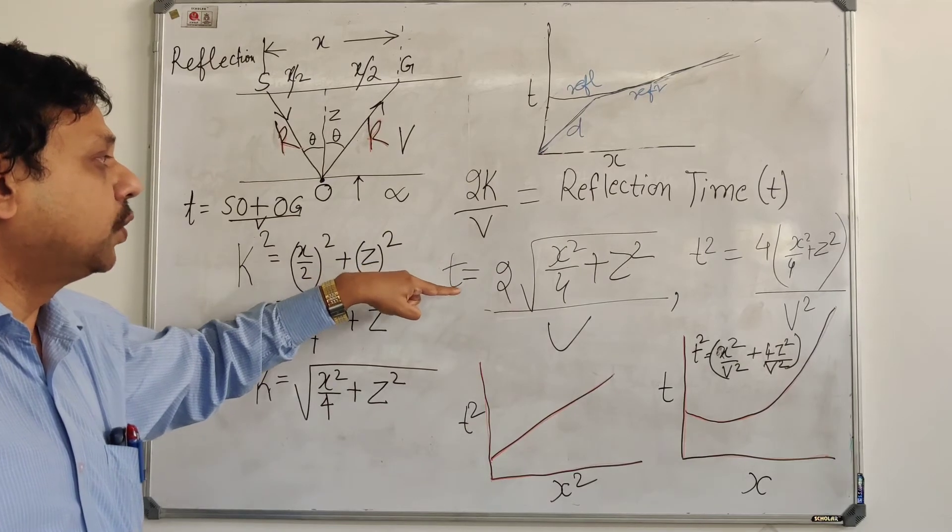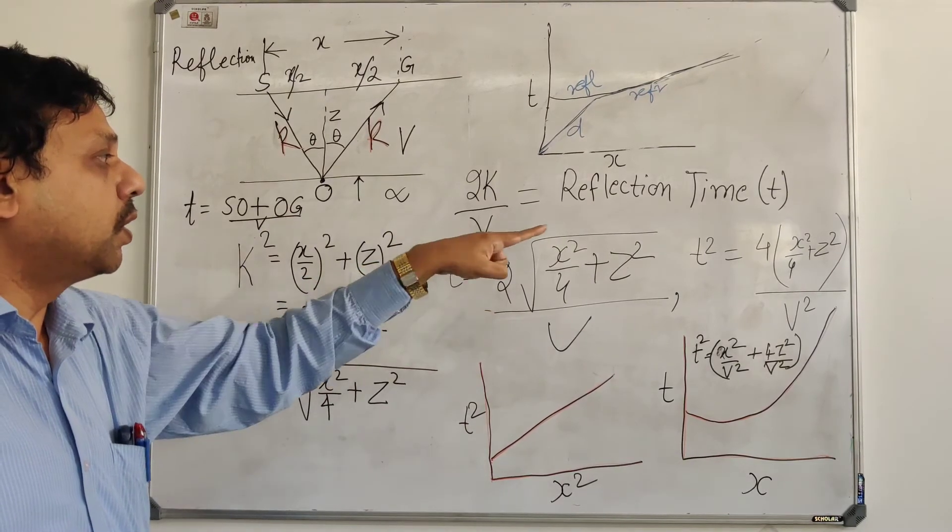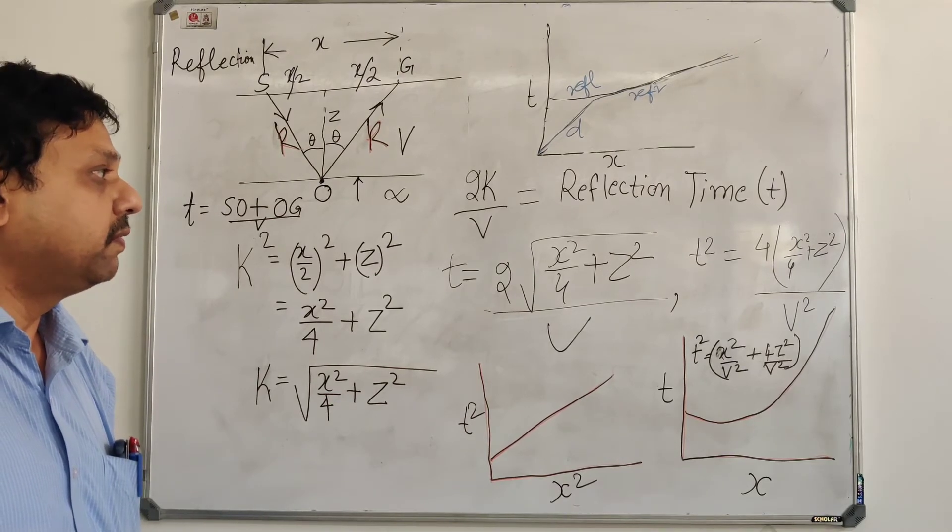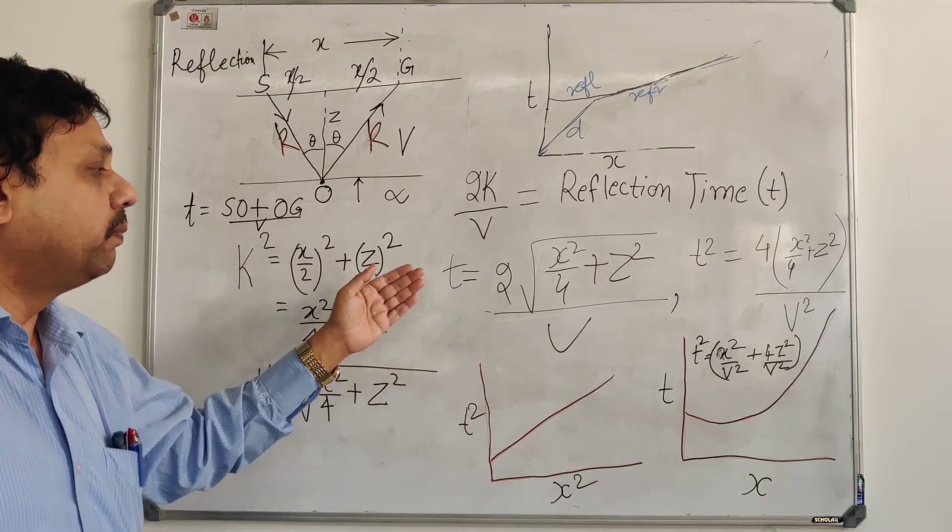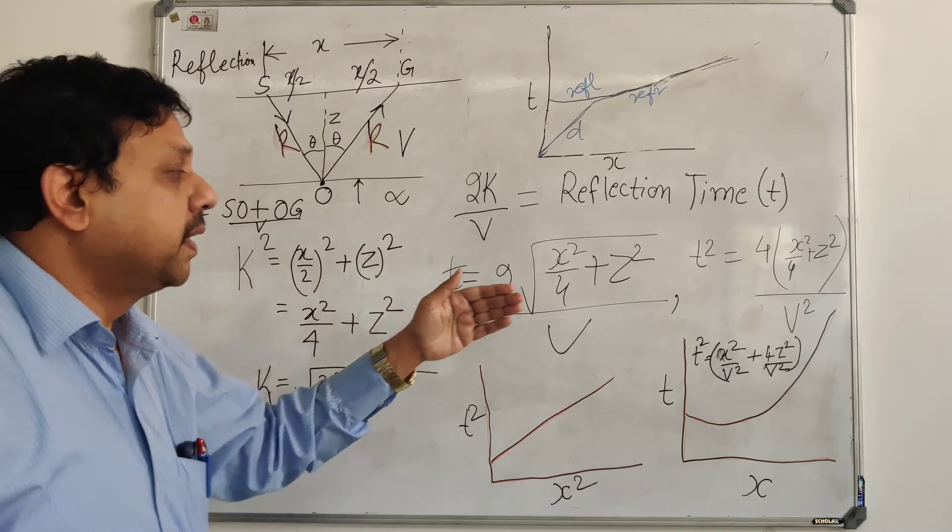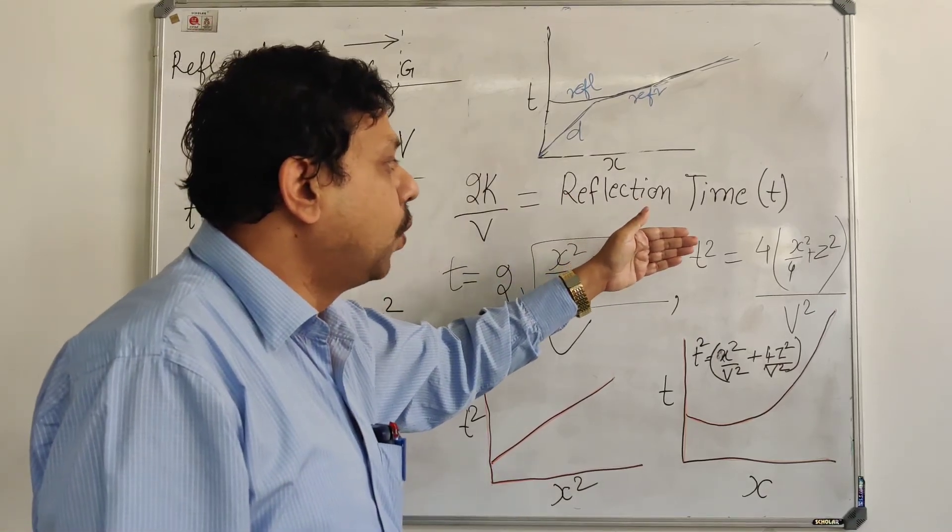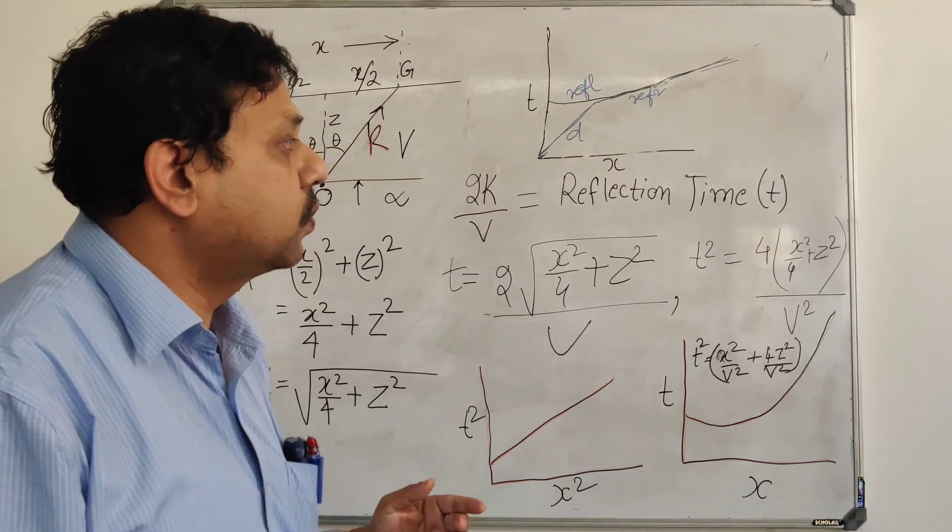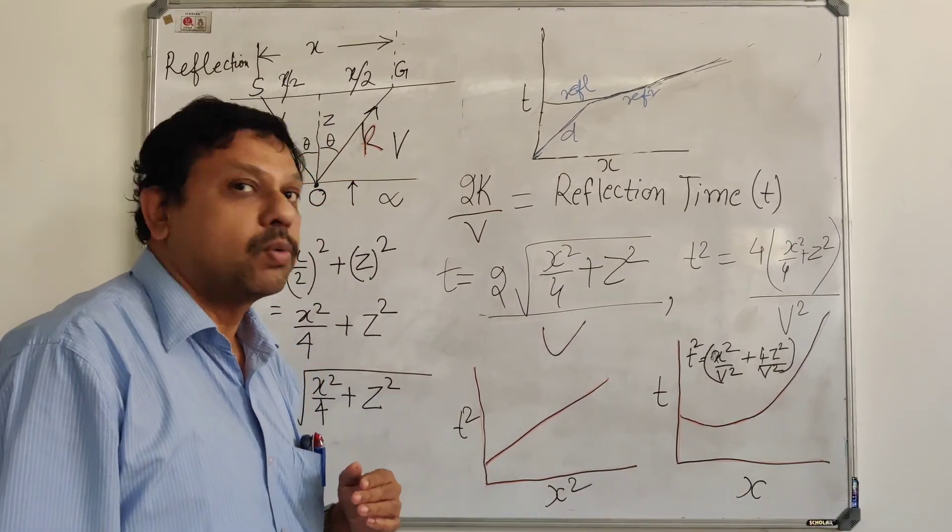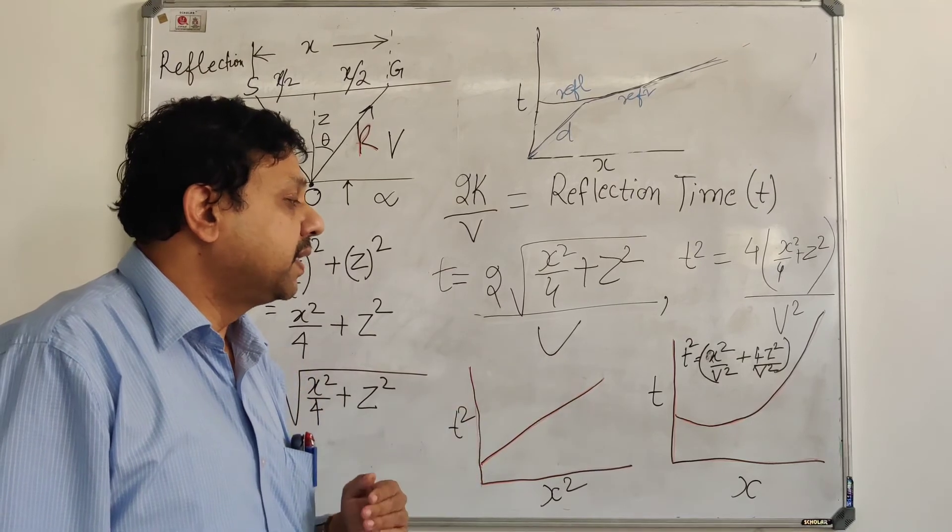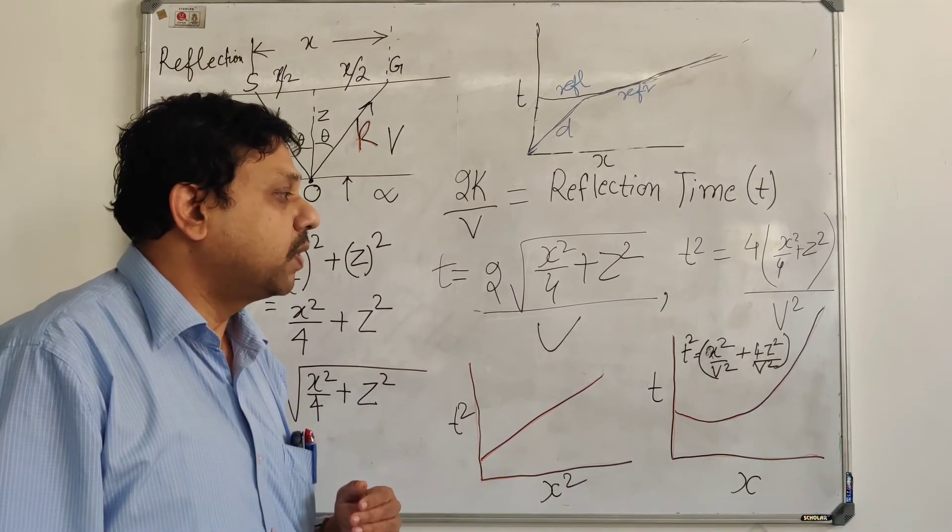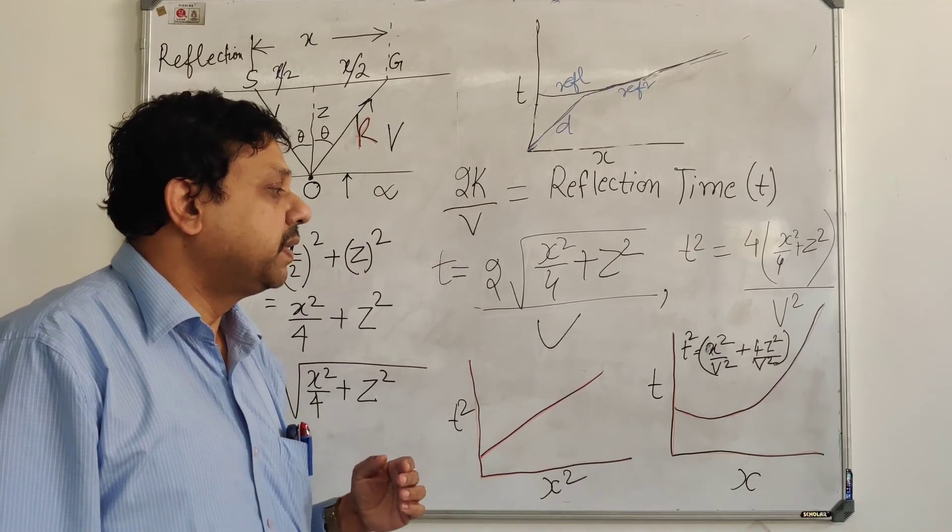The reflection time T is given as 2K by V. So T is equal to 2 square root of X square by 4 plus Z square divided by V. And if you square both the sides, it will be T square is equal to 4 times X square by 4 plus Z square divided by V square. So we have T square is equal to X square by V square plus 4Z square by V square.